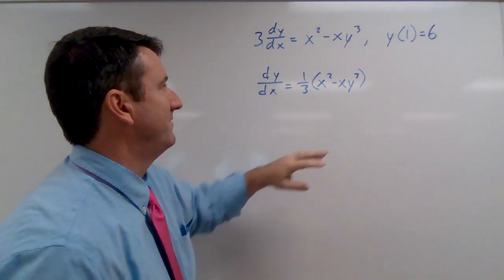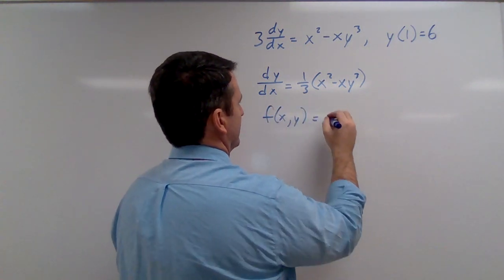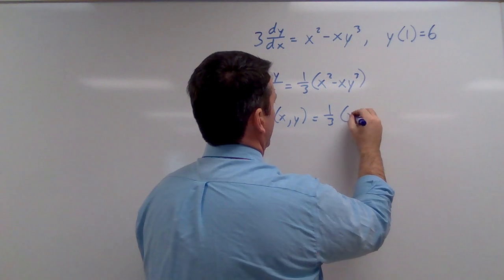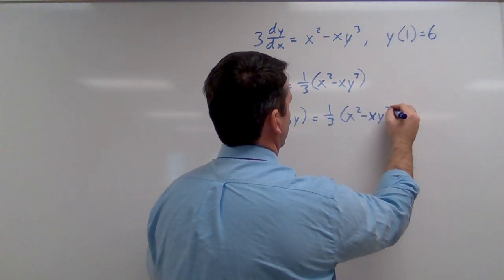And so our function f of xy is this: one third x squared minus xy cubed.